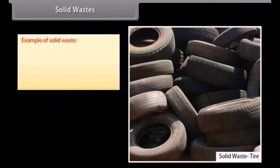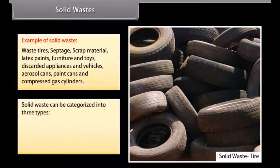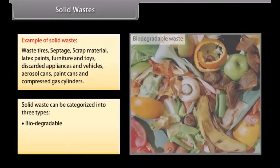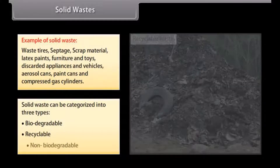Examples of solid waste include waste tires, septage, scrap material, latex paints, furniture and toys, discarded appliances and vehicles, aerosol cans, paint cans, and compressed gas cylinders. Solid waste can be categorized into three types: biodegradable, recyclable, and non-biodegradable.